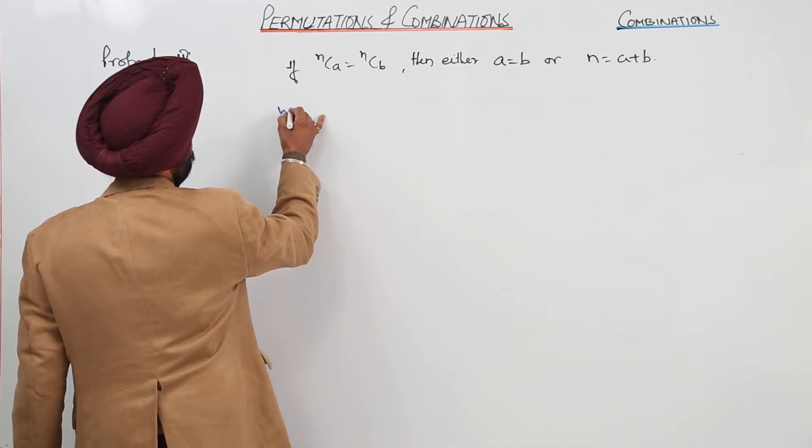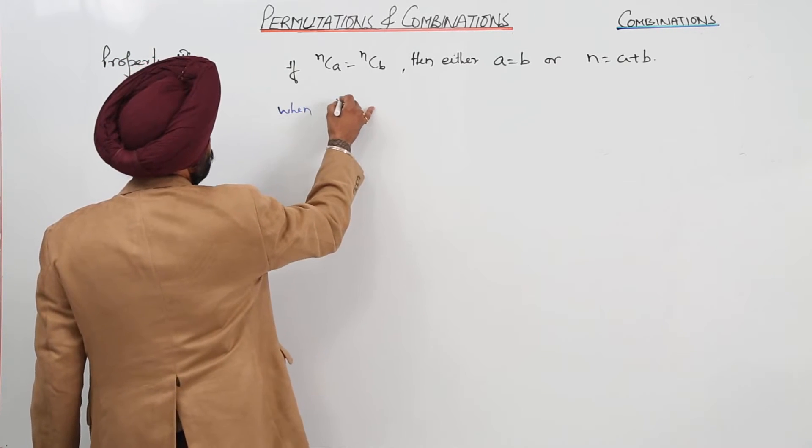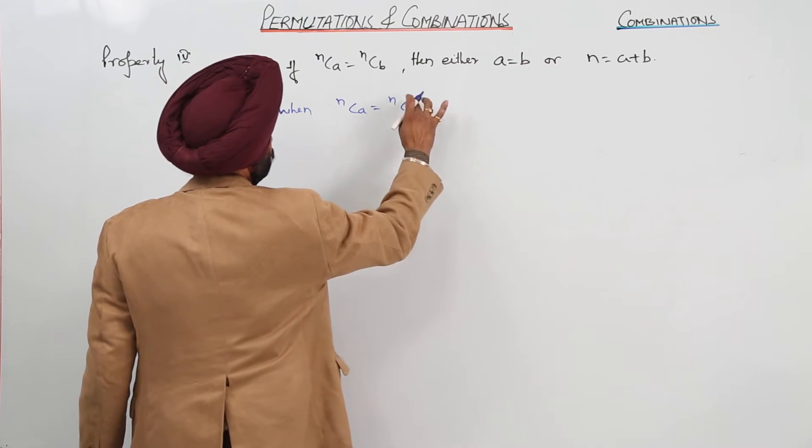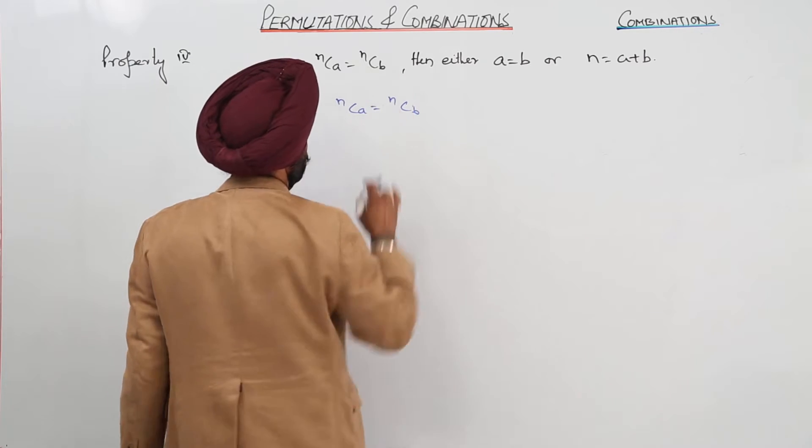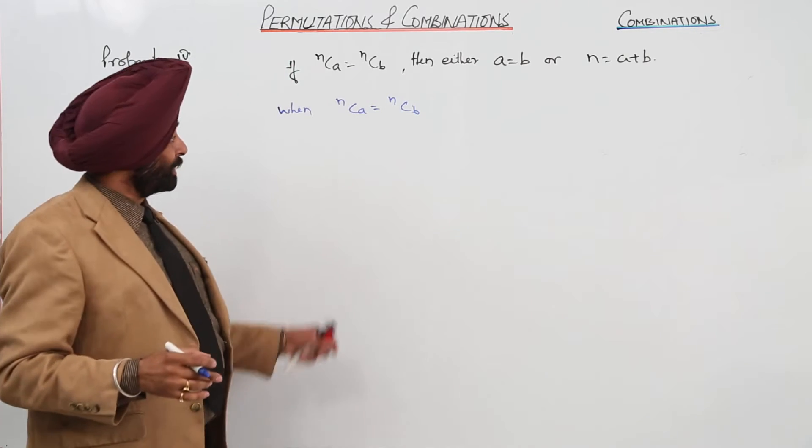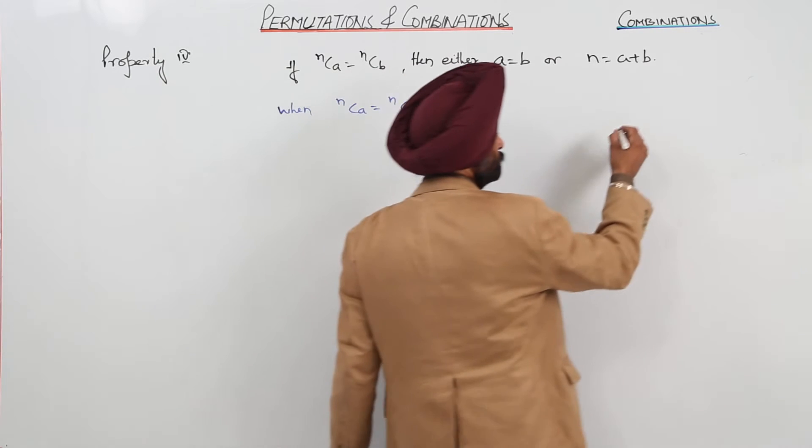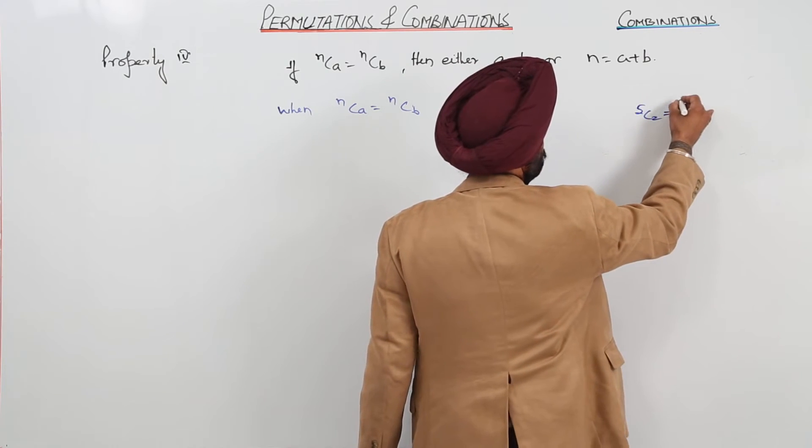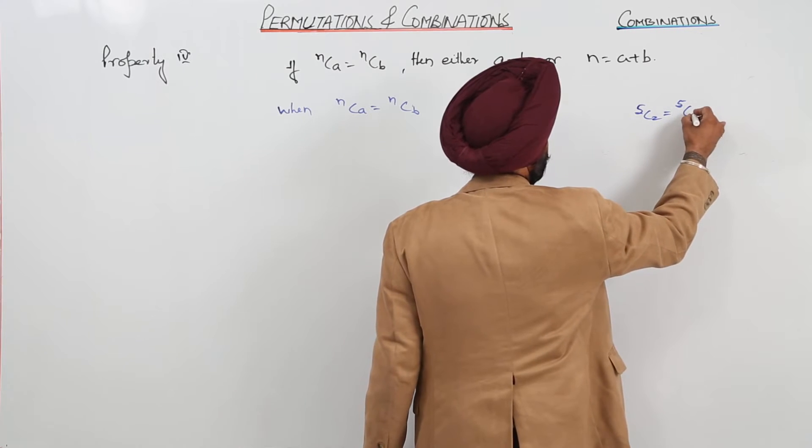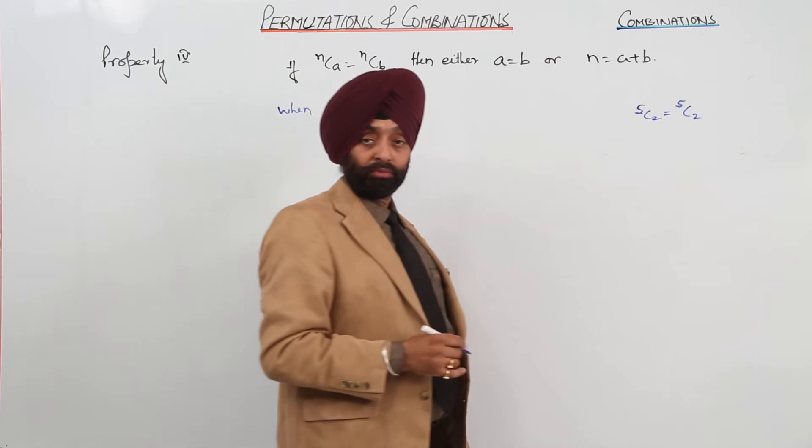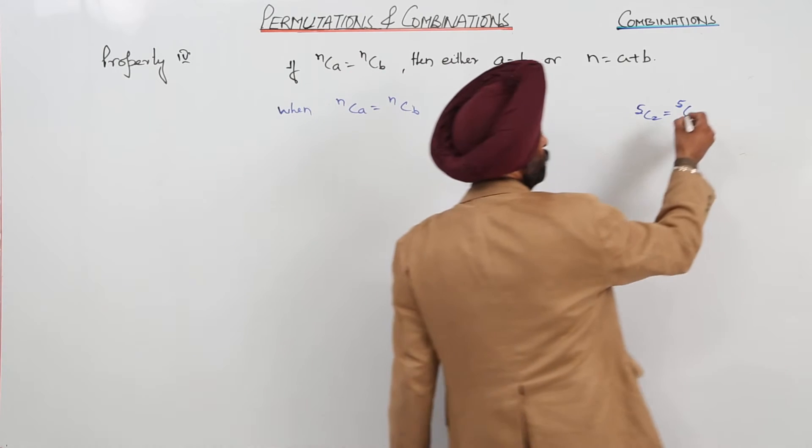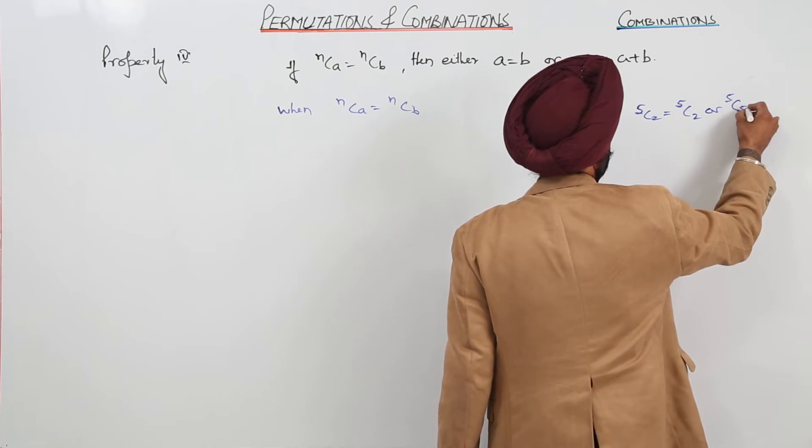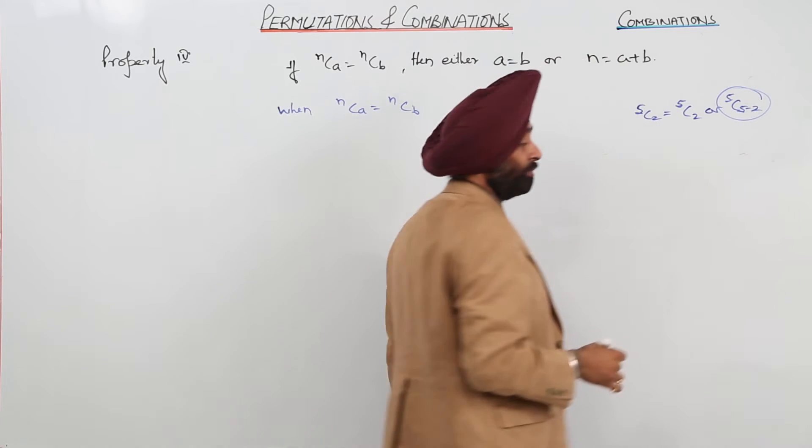When nCa is equal to nCb, what result can we get? Suppose we are having 5C2. We have already known that 5C2 can be equal to 5C2 or it can be equal to 5C5-2. This we have done in property 3.